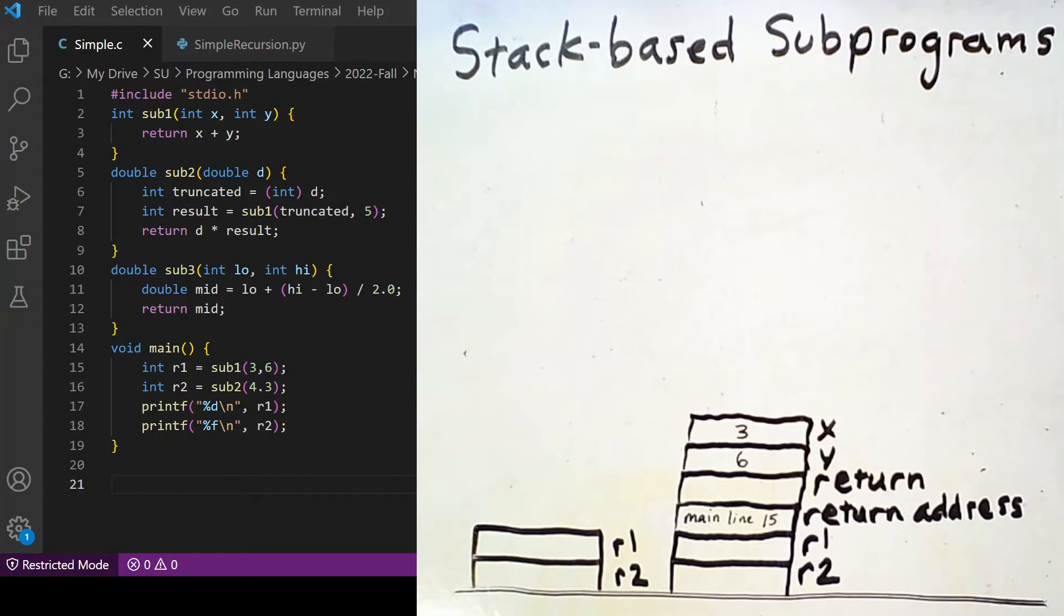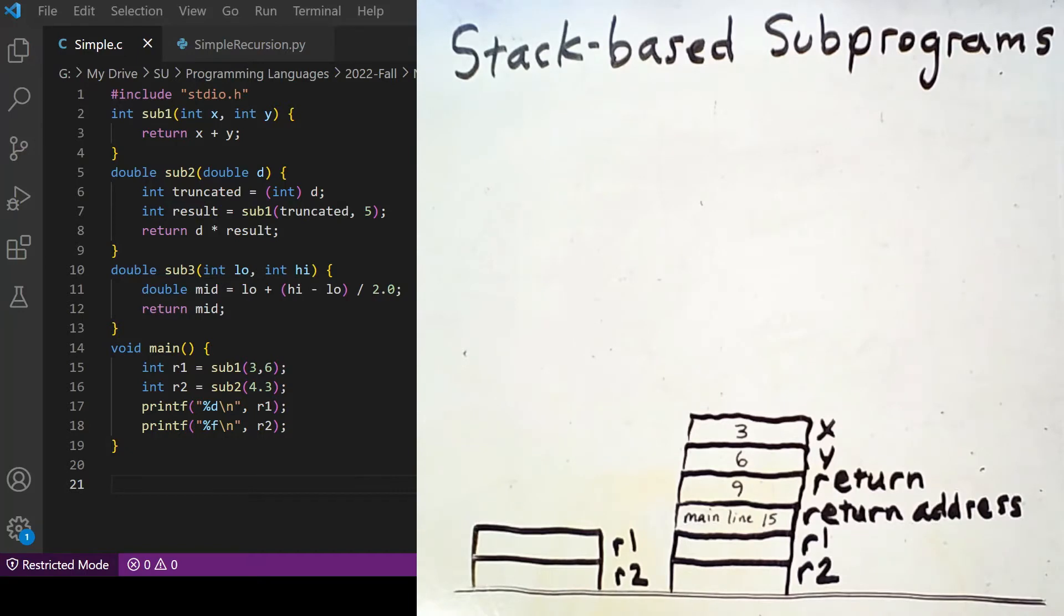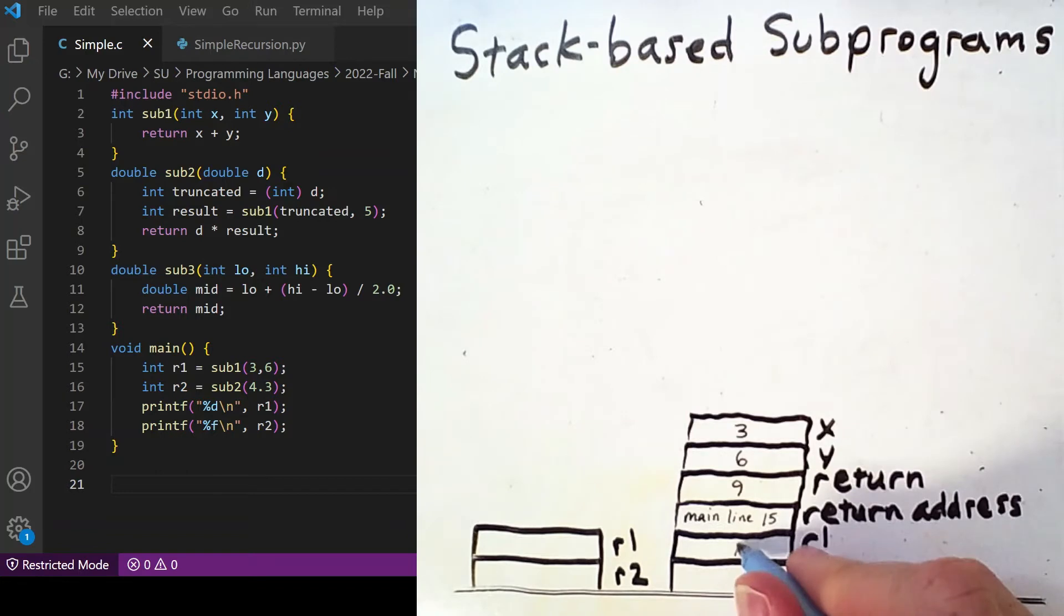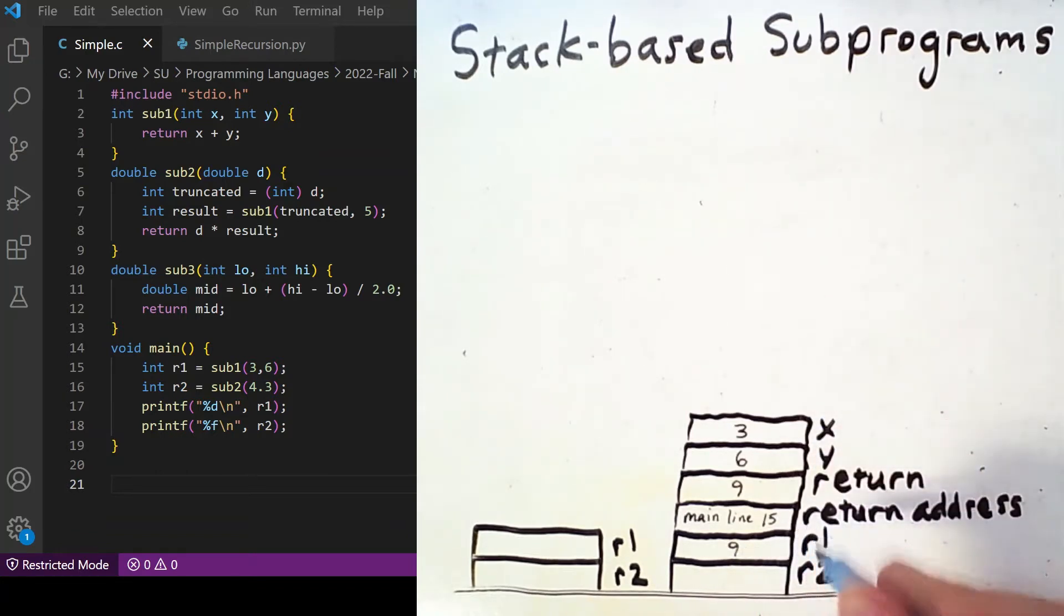Now, the return value for the call to sub-1 is going to be 9, so that gets placed there. And then we can return to line 15, at which point this return value 9 will be copied into R1, and we will remove this activation record for sub-1 from the stack.